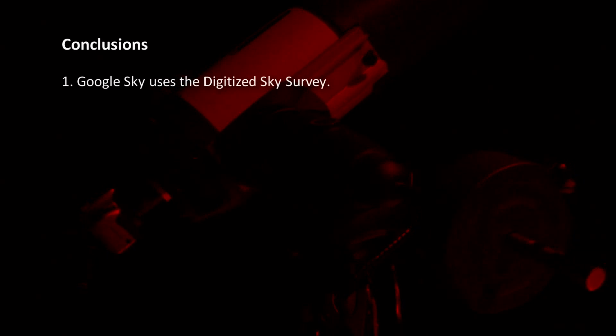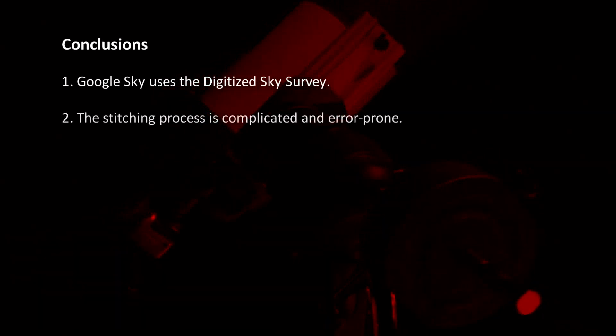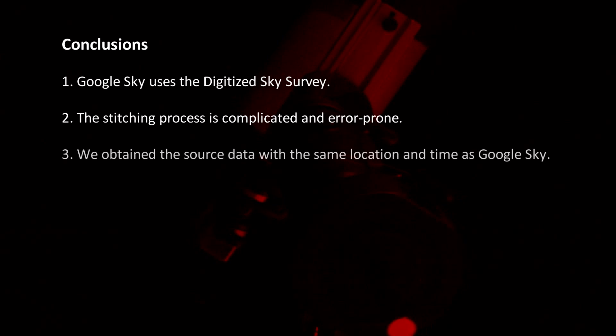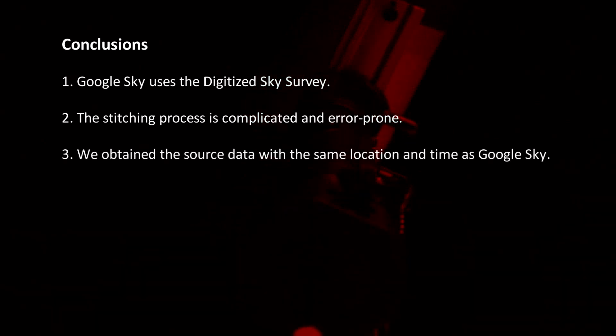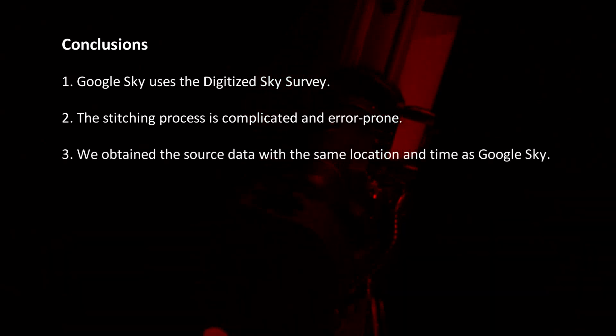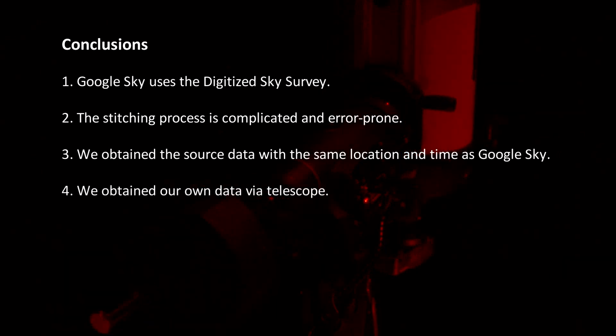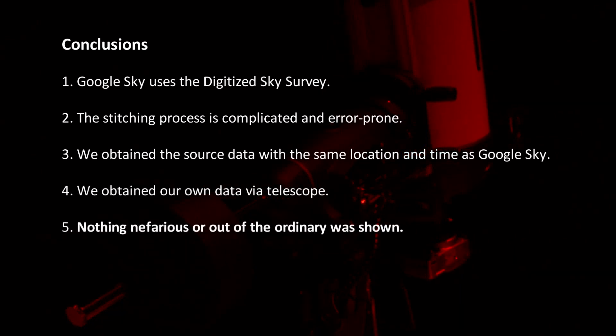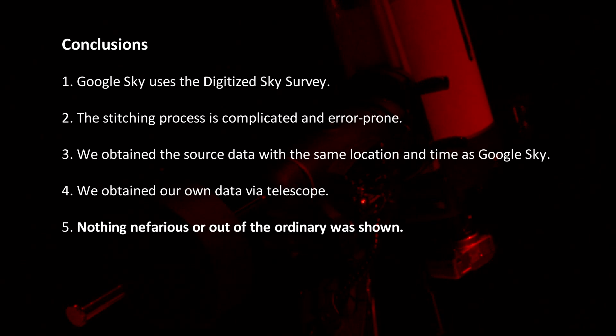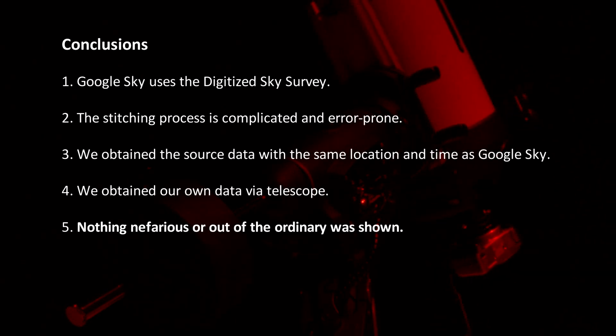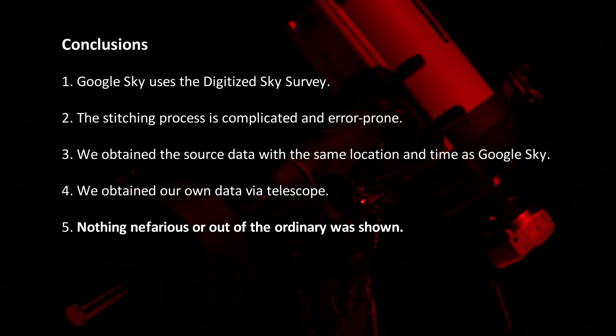To recap: Google Sky uses the Digitized Sky Survey for their data source. We know the stitching process is complicated and error-prone. We independently obtained the source data with the same location and time as Google Sky. We then obtained our own data via telescope. In all cases, nothing nefarious or out of the ordinary was shown. The Google Sky blank spot is a glitch in the software, not a cover-up or conspiracy to hide Nibiru or the truth. Be sure to try the methods outlined in this video yourself. You can apply these techniques to any blank spot in Google Sky.